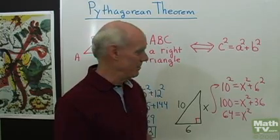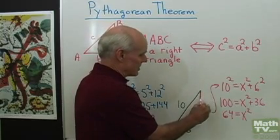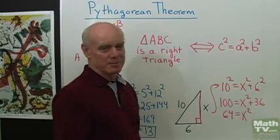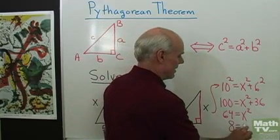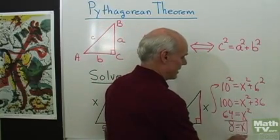And I know that 64 has two square roots, positive 8 and negative 8, but since X represents the length of this side, I know it must be a positive number, so that's going to come out to be 8. So X is equal to 8 in that case.